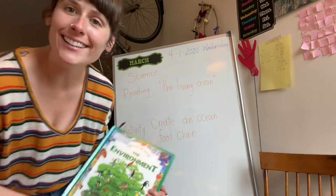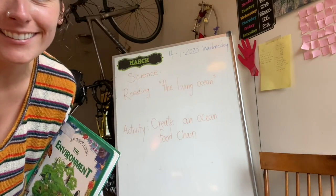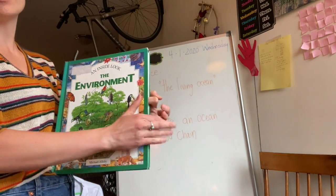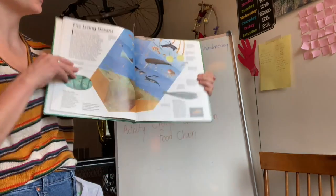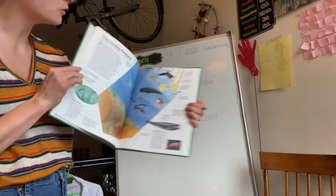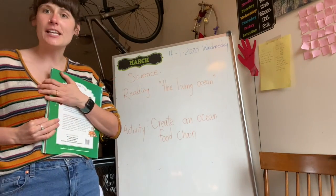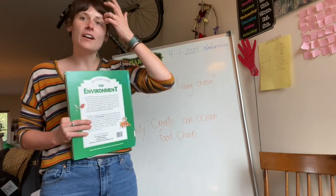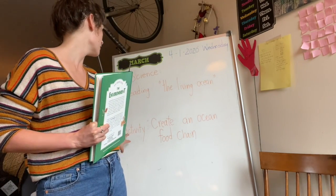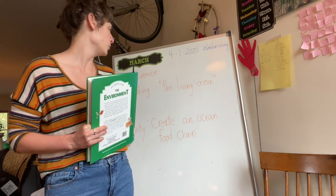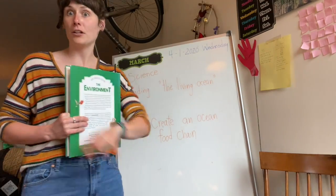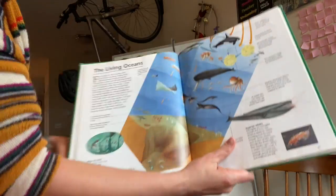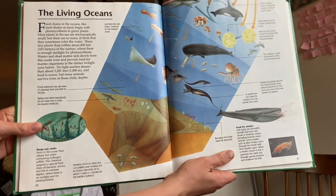Hey guys, it's science time! Today we're going to revisit our environment book — we're going to be on pages 20 and 21. We're going to be reading about the living ocean. For our fun activity after, we're actually going to be creating an ocean food chain of our own. So let's go ahead and get started.